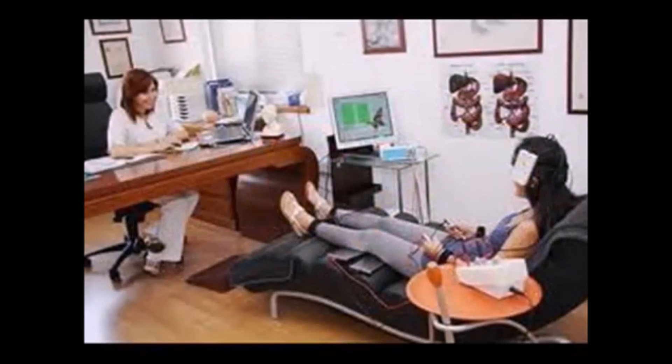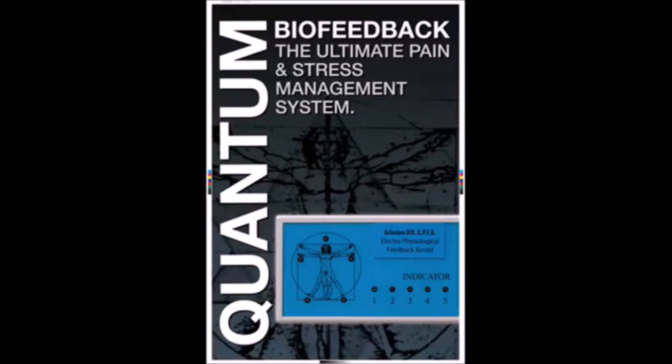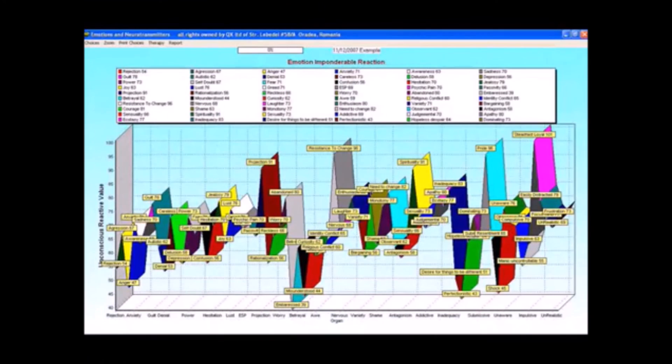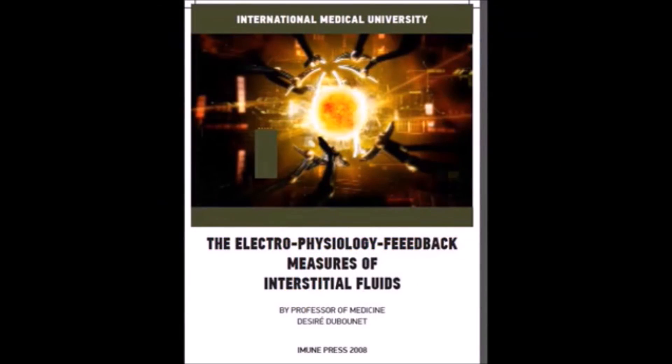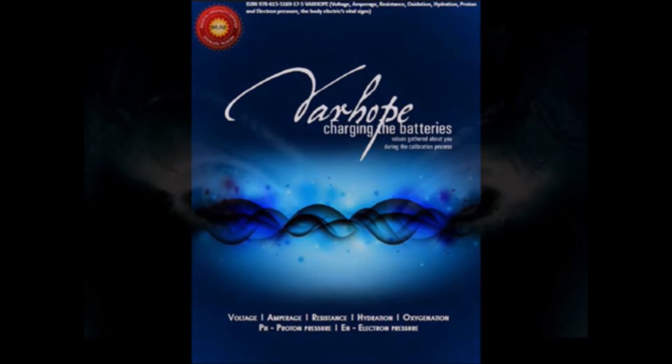The human body is designed to resist electrical stimulation. But if we find just the right harmony by measuring the volts and amps of the patient, and by finding the right harmony, we can be able to trickle in electrons into the body and stabilize their VARHOPE.